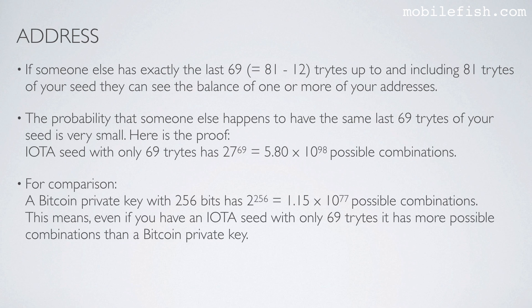For comparison, a Bitcoin private key with 256 bits has 2 to the power of 256, which equals 1.15 times 10 to the power of 77 possible combinations. This means that even if you have an IOTA seed with only 69 trites, it has more possible combinations than a Bitcoin private key.